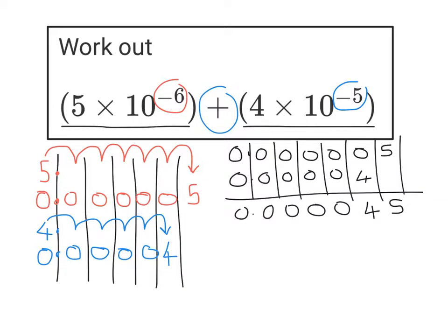Now I need to turn this back into standard form. So to turn it back into standard form let's just carry on my place value table. I need to make sure I'm picking a number between 1 and 10. So with these digits 4 and 5 what number is between 1 and 10? It's got to be 4.5.